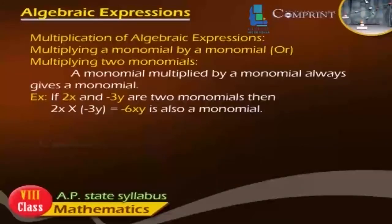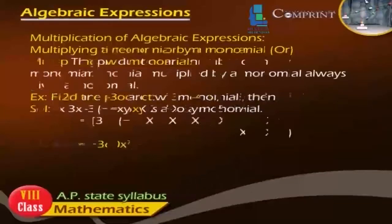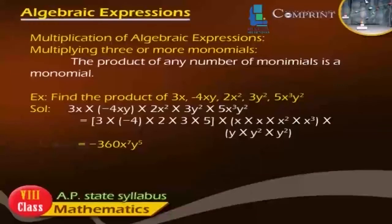Multiplication of Algebraic Expressions — Multiplying a monomial by a monomial: A monomial multiplied by a monomial always gives a monomial. For example, if 2x and minus 3y are two monomials, then 2x into minus 3y equals minus 6xy, which is also a monomial. The product of any number of monomials is a monomial.